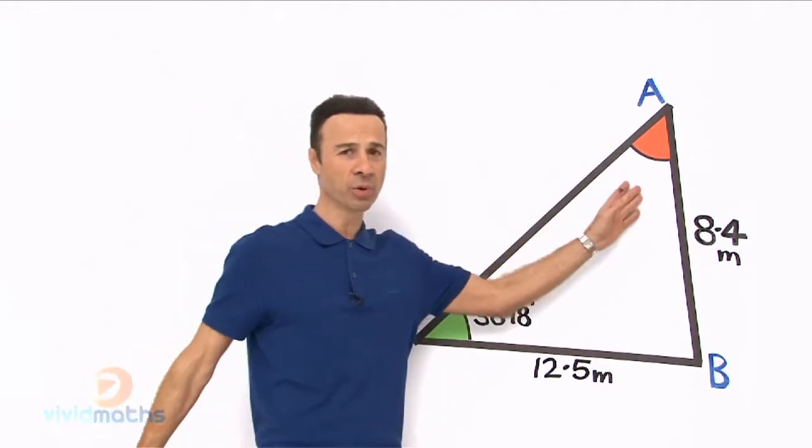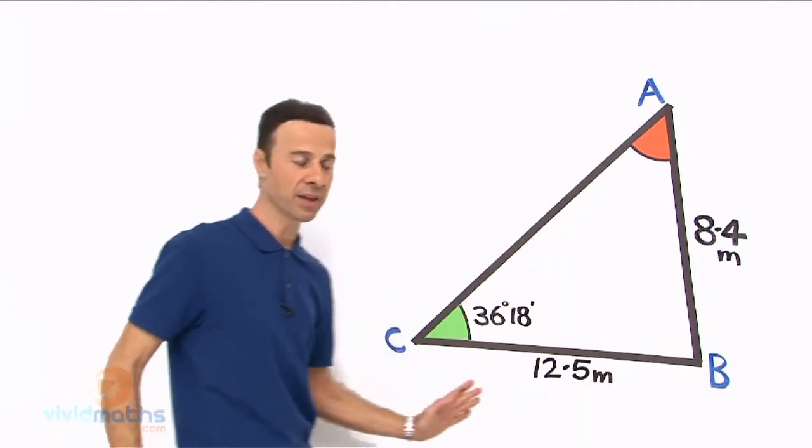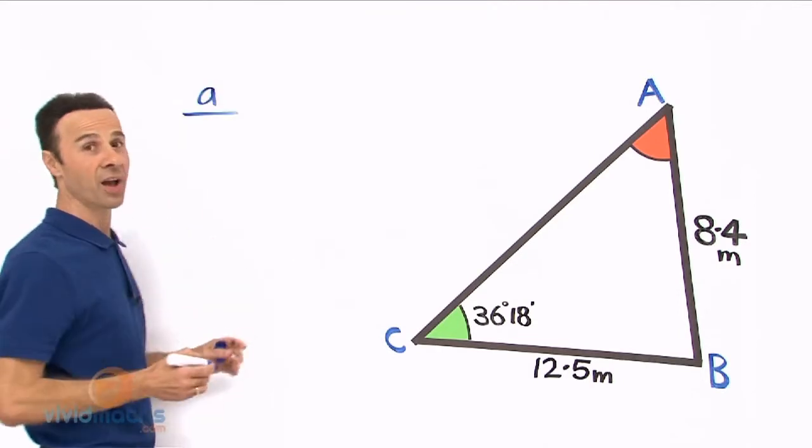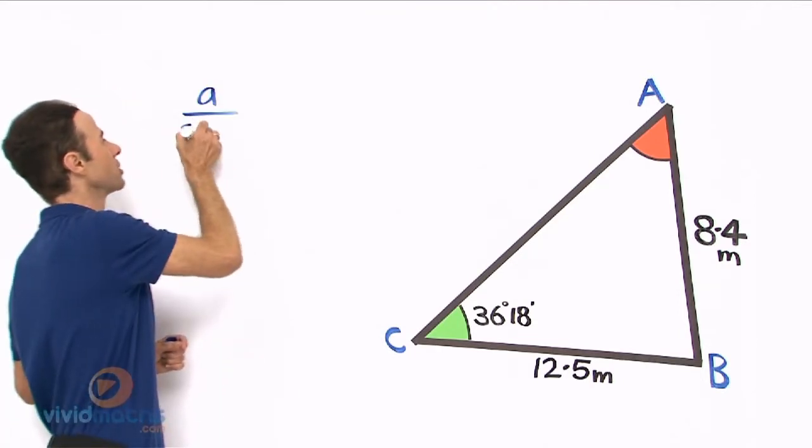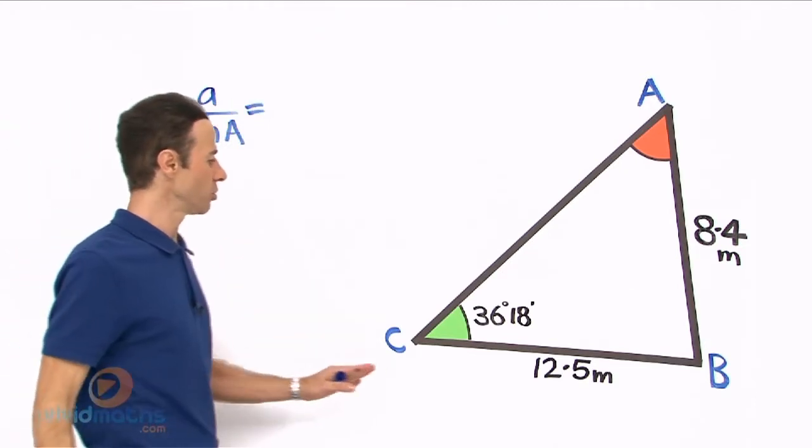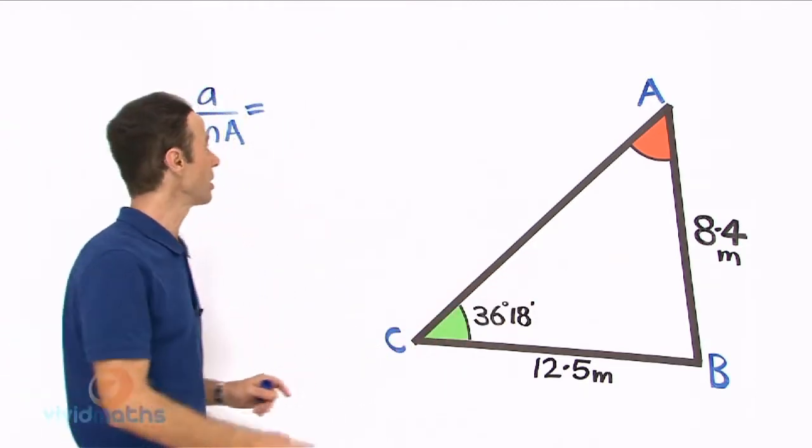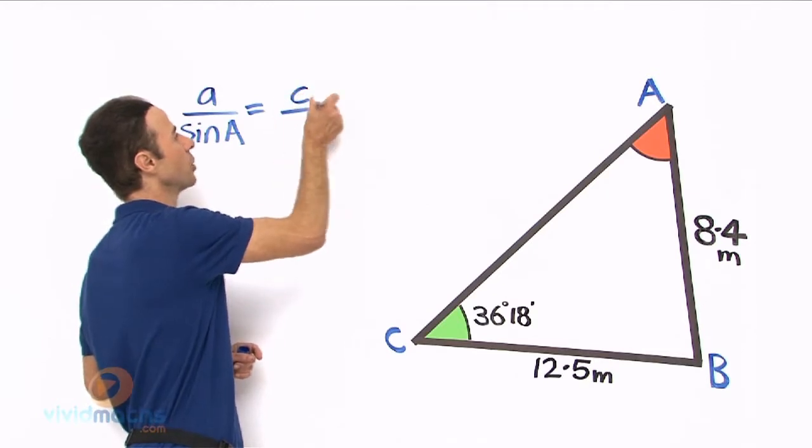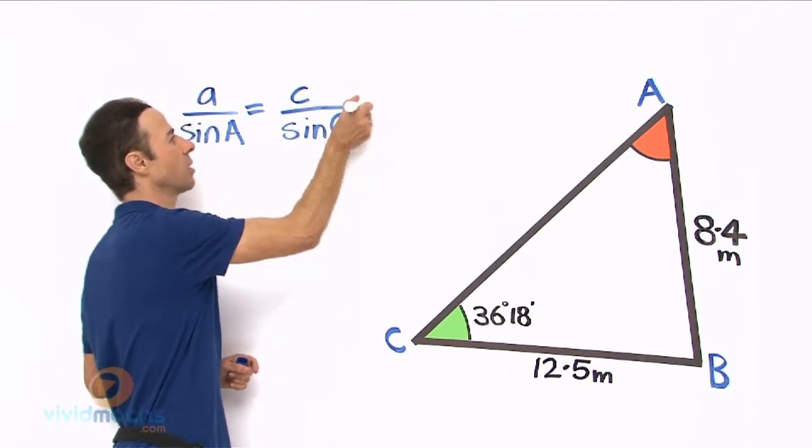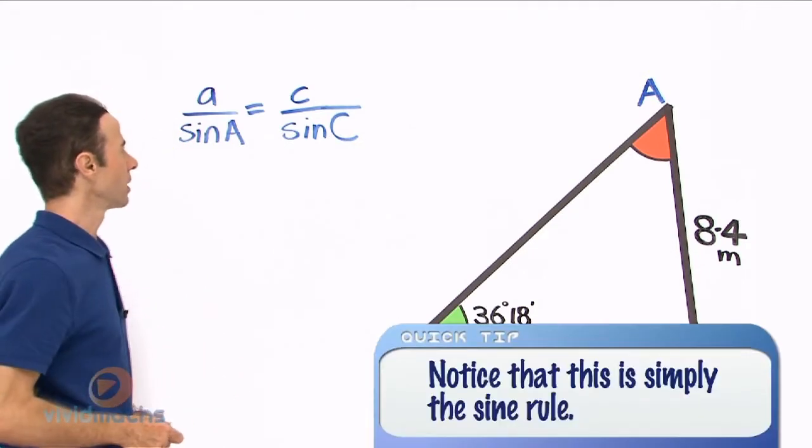We have capital A there, the angle that we are looking for, and we have a length over here. So the little a over here, throw it down the side guideline: sine a equals let's do C here because C goes across there, so little c all over sine big C, that is the angle there.